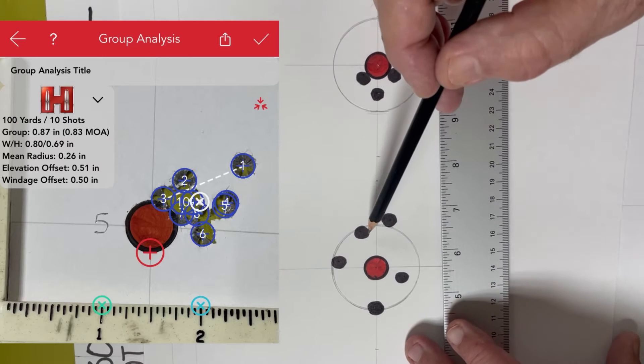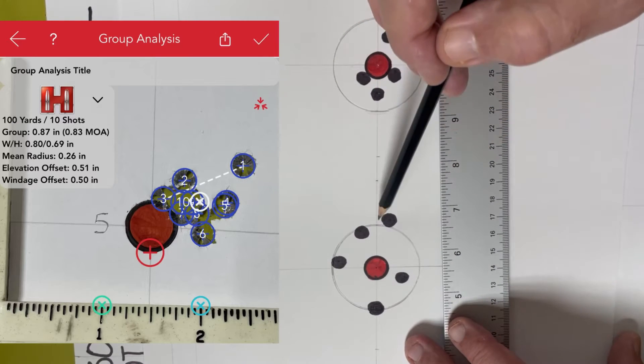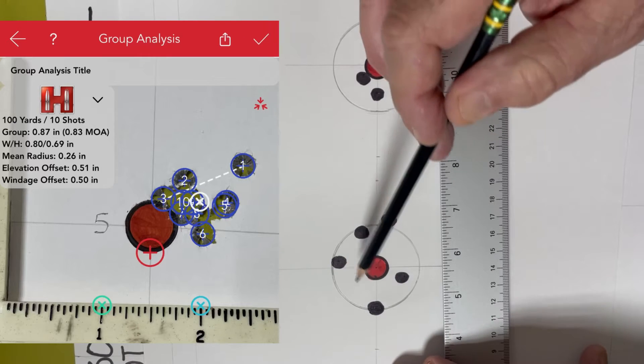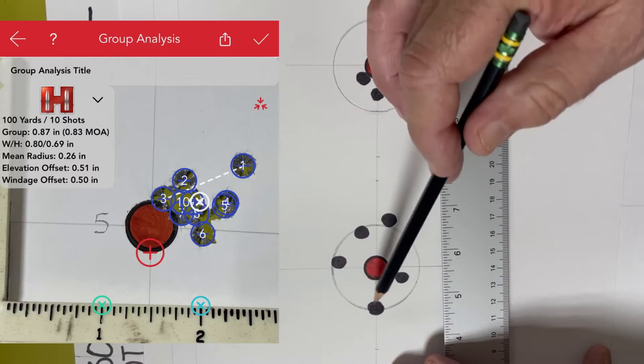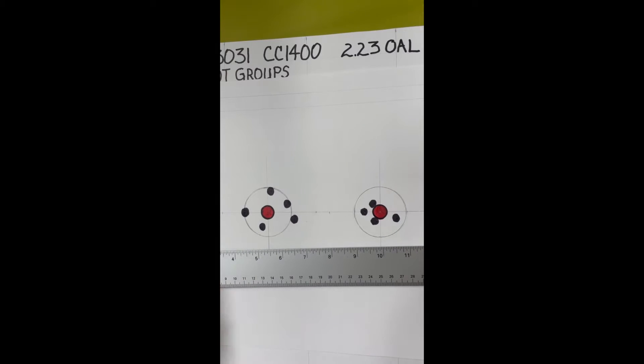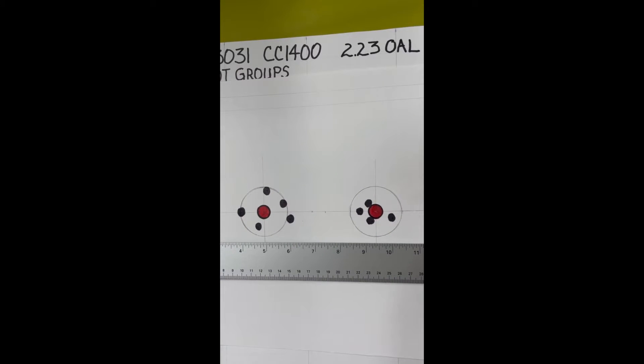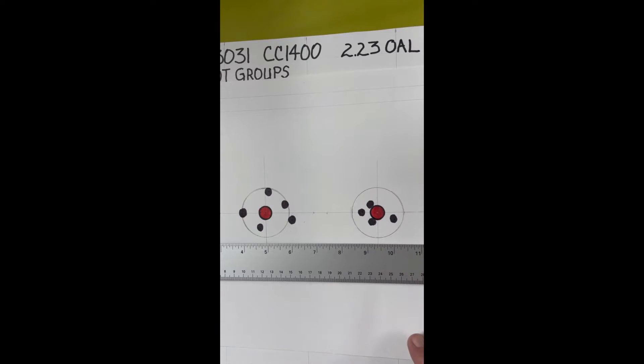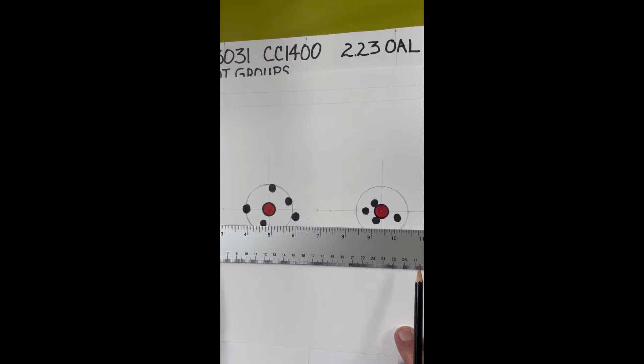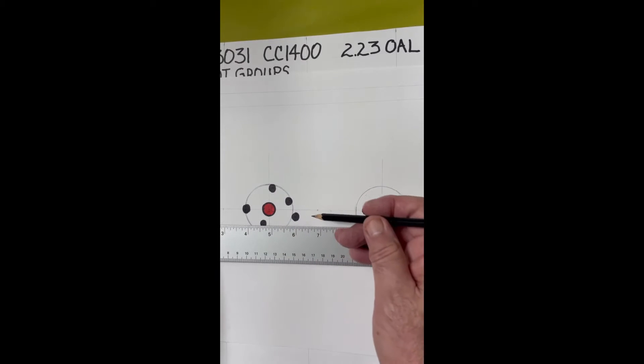It measures the distance of each one of those shots to the center of that group, to the average center of that group, and then it gives you not only an extreme spread, but also a mean radius. So, how we calculate a mean radius, if you were to do this manually, you would need a ruler, and something that gives you a very straight edge, maybe a T-square. Let's just do this group here first.